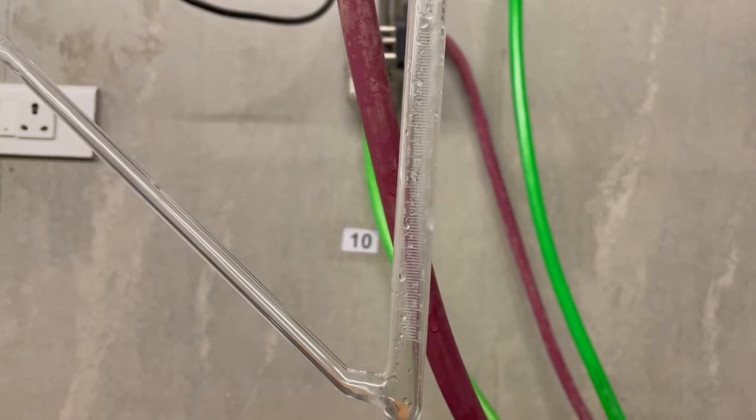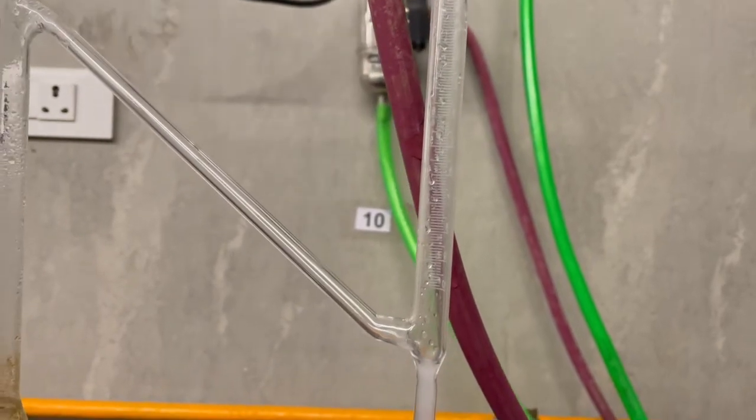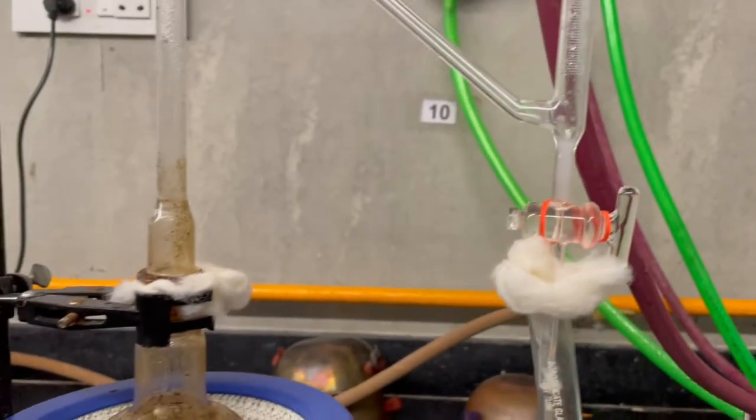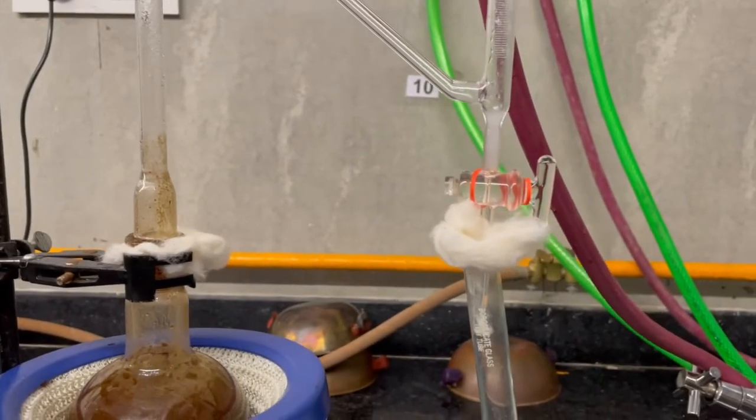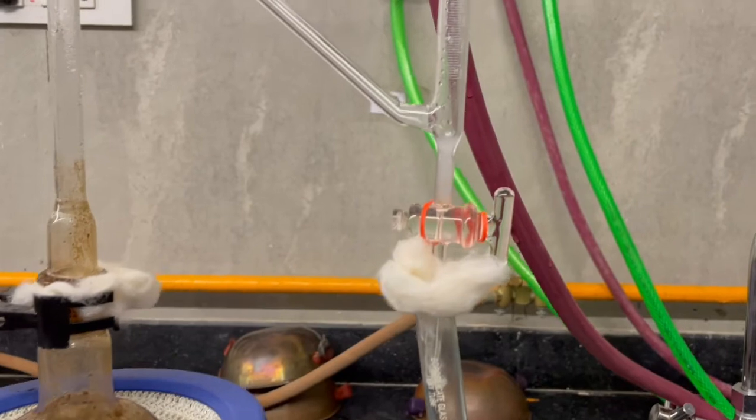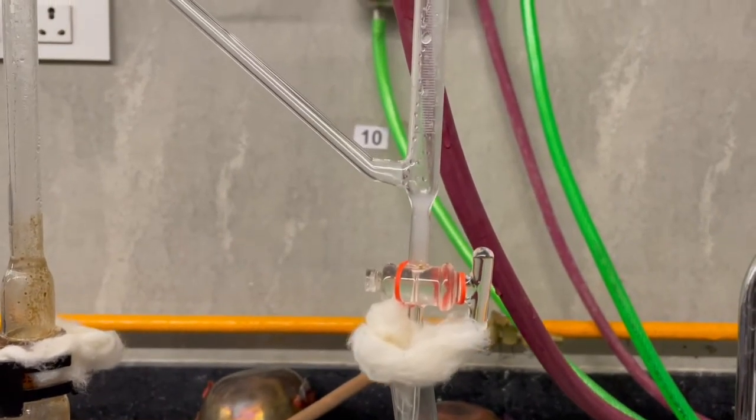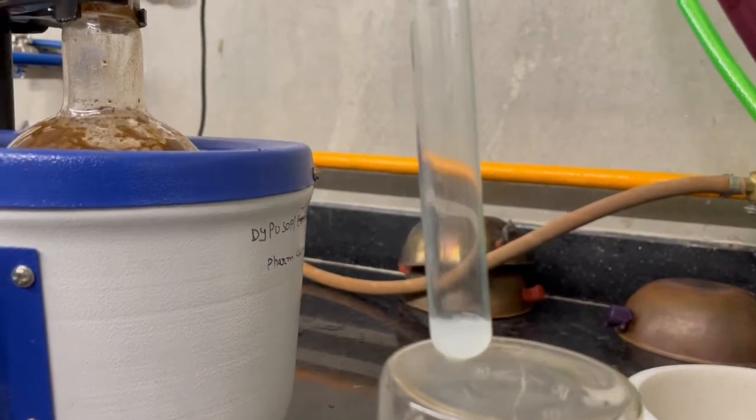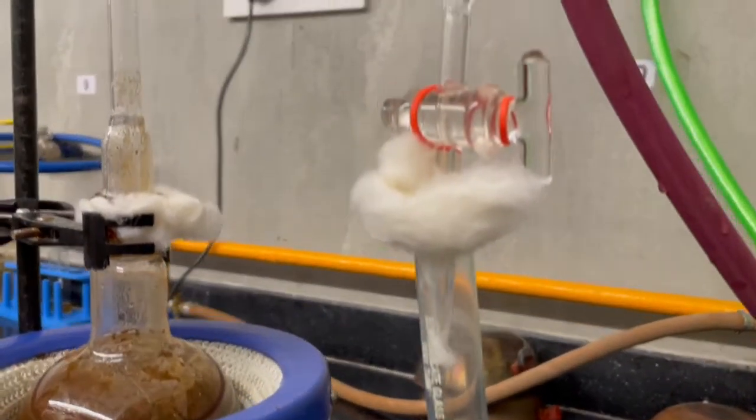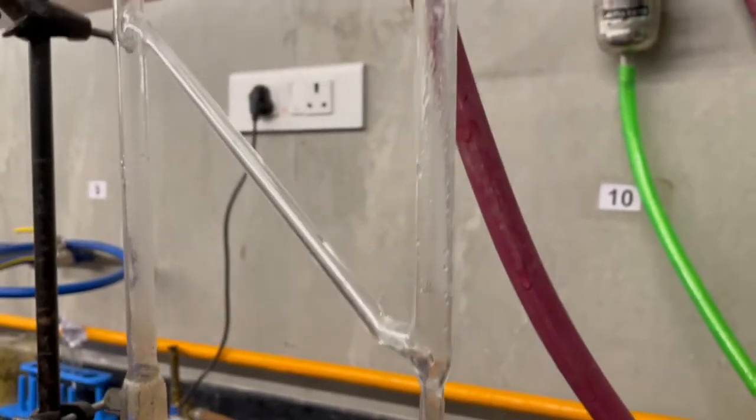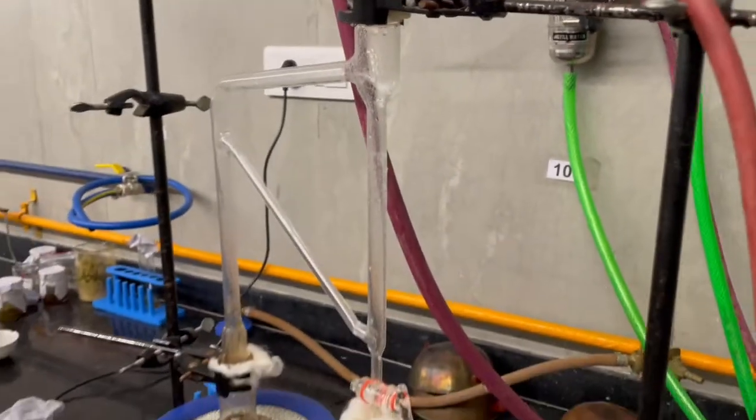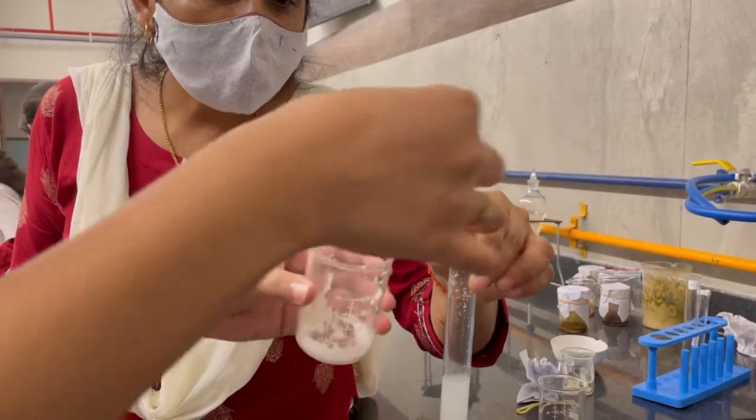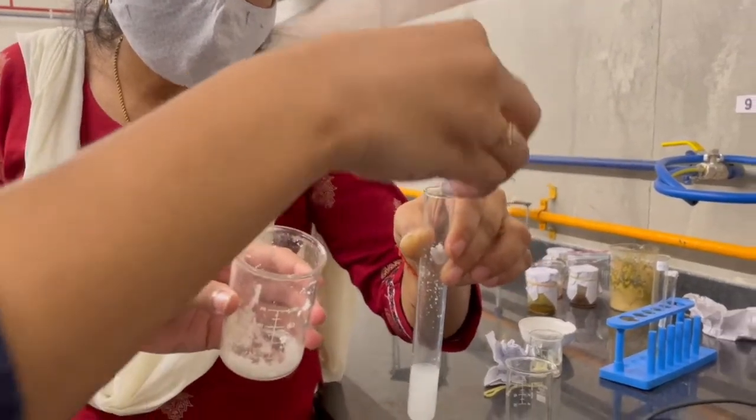Now we will have the condensed vapors of clove oil. Add sodium chloride in the filtrate.